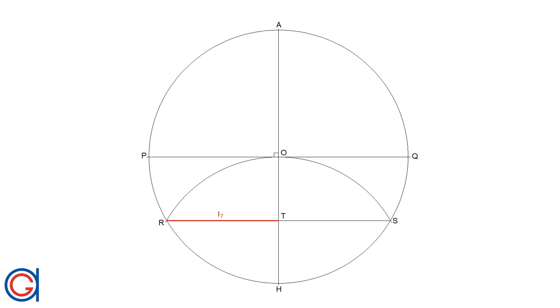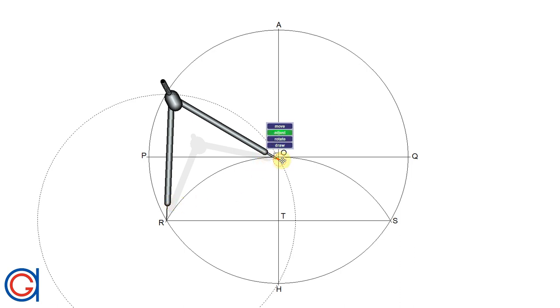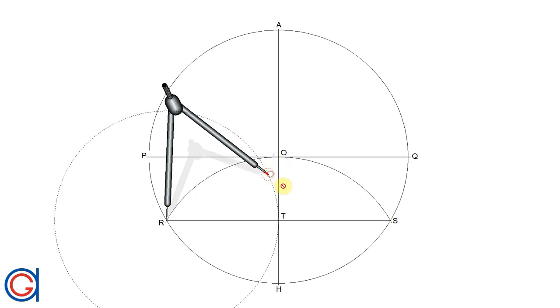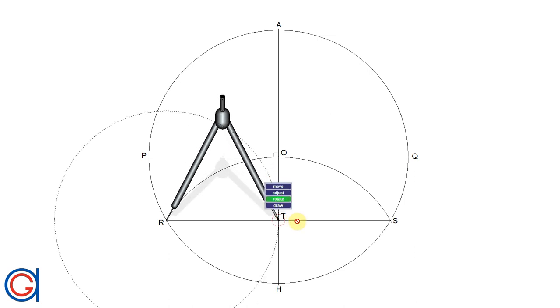And now the distance RT is the distance that divides the circumference of the circle into seven equal parts. So starting from point A and dividing each of these segments in half by starting at point H we will get 14 equal divisions.